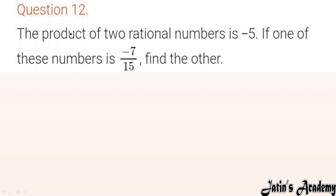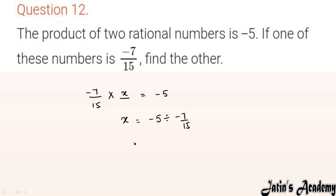Question 12: The product of two rational numbers is minus 5. One of them is minus 7/15 — find the other. Let other = x. So minus 7/15 × x = minus 5. Move minus 7/15 to divide: x = minus 5 ÷ (minus 7/15). Divide converts to multiply, take reciprocal. Minus cancels minus. Answer: x = 5×15/7 = 75/7.